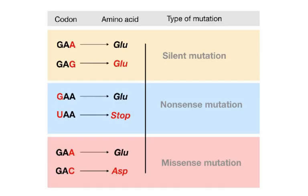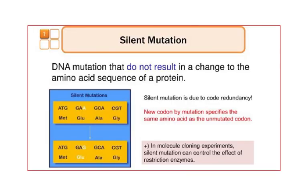In substitution, one base is substituted. GAA codes for glutamic acid and GAG also codes for glutamic acid — so that would be a silent mutation. But if GAA becomes UAA, that's a stop codon — a nonsense mutation. If GAA becomes GAC, that codes for a different amino acid — a missense mutation. You don't have to know the names nonsense and missense, but a silent mutation occurs because of code redundancy: the new codon specifies the same amino acid as the original, so DNA mutations do not result in a change in the amino acid sequence of the protein.